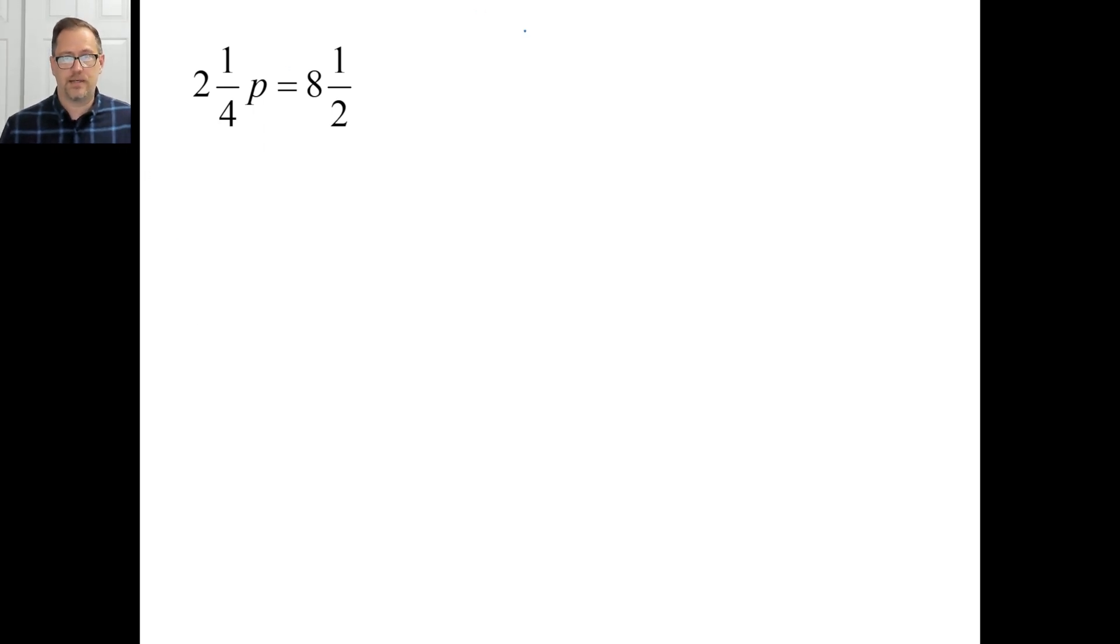Okay, so let's work with the idea that it's about 4. So let's change this into an improper fraction. 9 over 4P is equal to 17 over 2. And we're going to reciprocalize this, if that's a word. If not, it should be. Okay. So let's say 4 over 2, that's going to be 2.